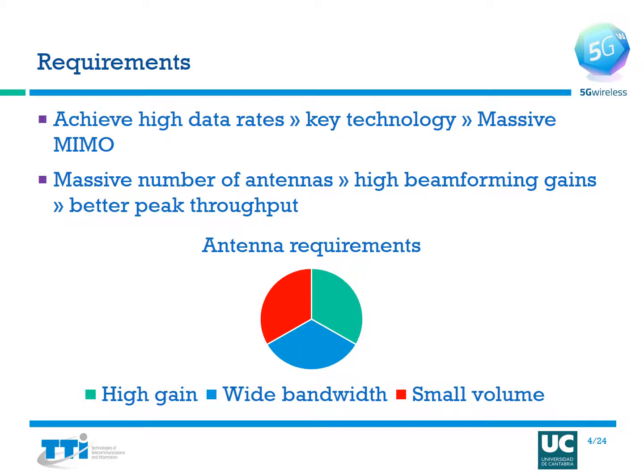In order to achieve the high data rates, a key technology is the massive MIMO — the massive multiple input multiple output system. It has a massive number of antennas that result in high beamforming gains and therefore give a better peak throughput. The antenna requirements that go into the design of such massive MIMO antennas revolve around three important factors: one is to achieve high gain, to obtain a very high bandwidth, and to have a very small volume. All three factors are often interdependent and a trade-off has to be made between them.